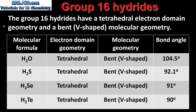We'll start by looking at the electron domain and molecular geometry. For each molecule the electron domain geometry is tetrahedral. The molecular geometry is also the same for each molecule, which is bent or V-shaped.